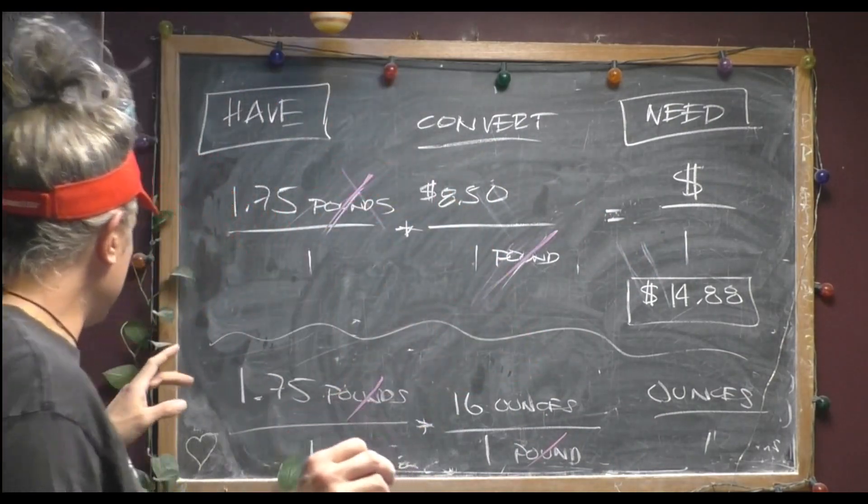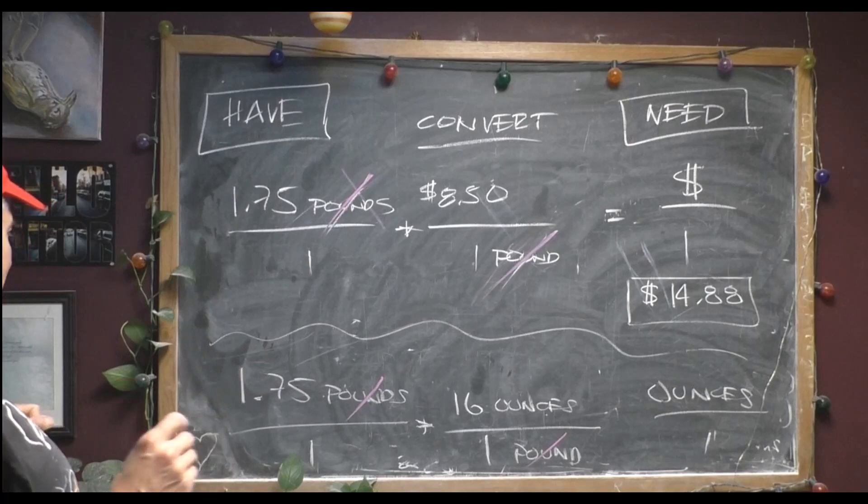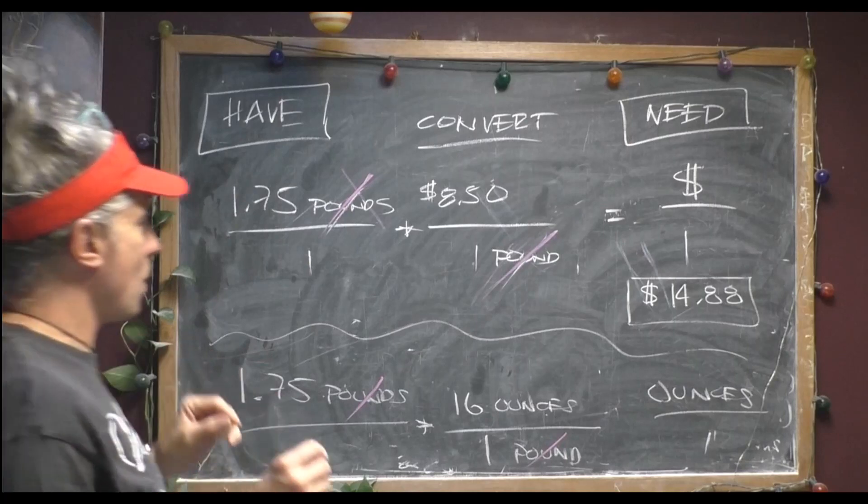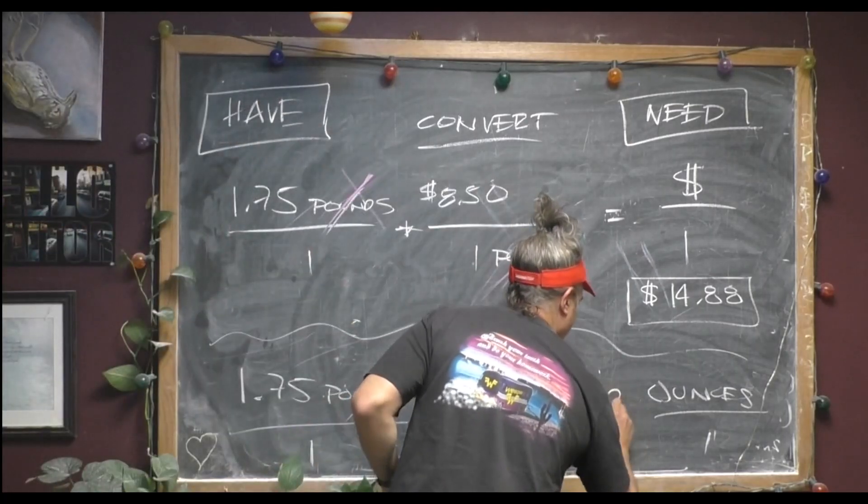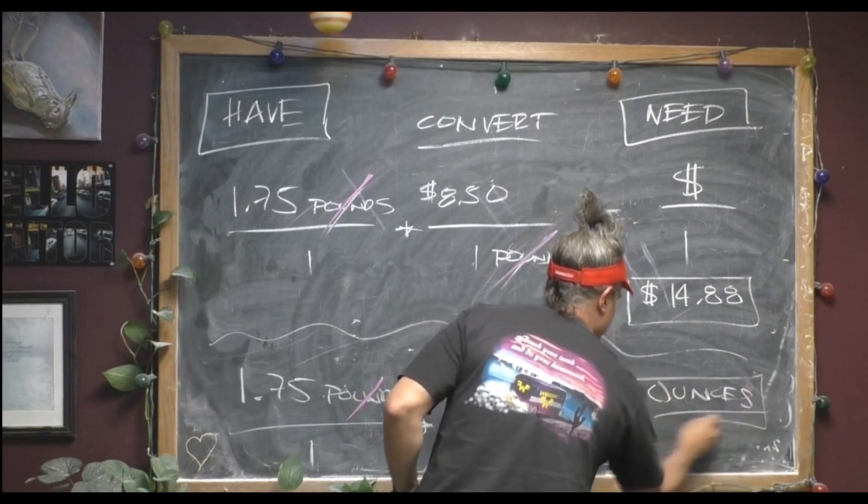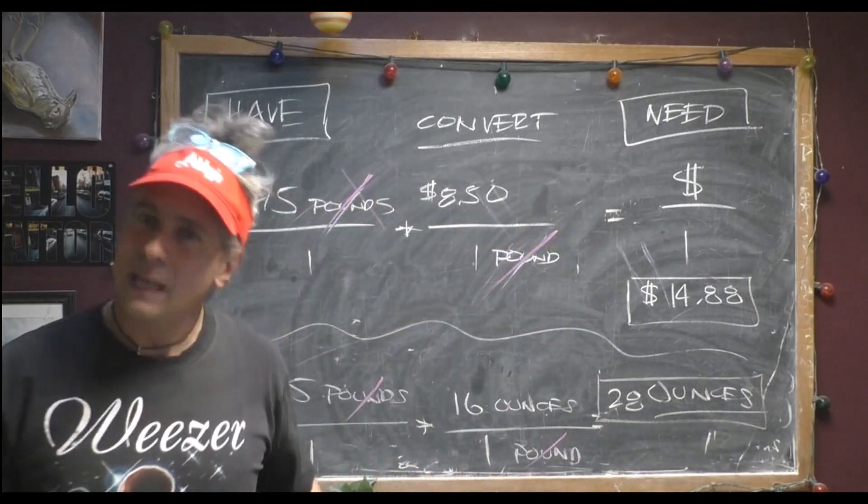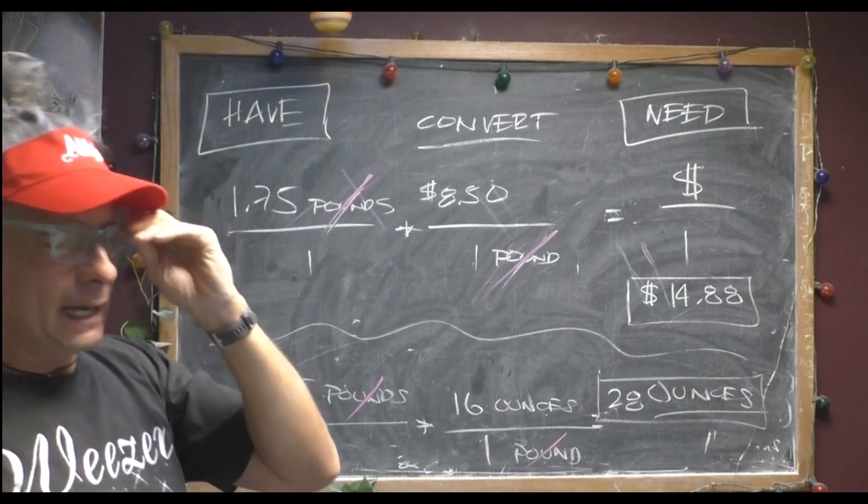This one I can do in my head because I can divide 16 by 4. So that's going to be 16 plus 12 is 28 ounces. 28 ounces of salmon.